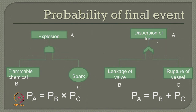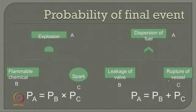For an OR gate, the probability of success of dispersion of fuel will be a summation of the two intermediate event probabilities, because either of them is sufficient to cause the final event. So for an AND gate it is a product of participating event probabilities; for an OR gate it is a summation — giving the probability of occurrence of the final event, in this case dispersion of fuel or explosion.